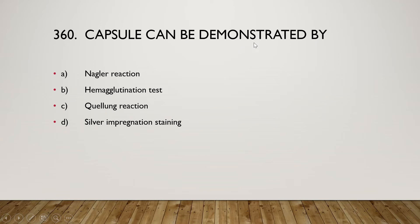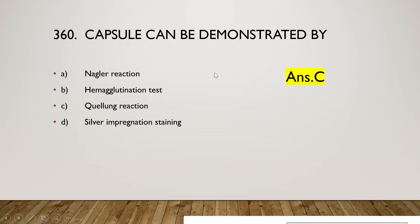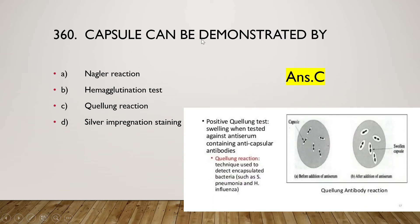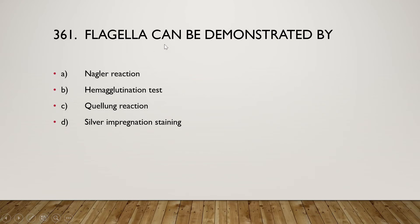Next: capsule can be demonstrated by Nagler reaction, hemagglutination test, Quellung reaction, or silver impregnation staining? The right answer is option C, Quellung reaction. In Quellung reaction, the capsule swells when tested against antiserum containing anti-capsular antibodies. This technique is used to detect encapsulated bacteria such as Haemophilus influenzae and Streptococcus pneumoniae.